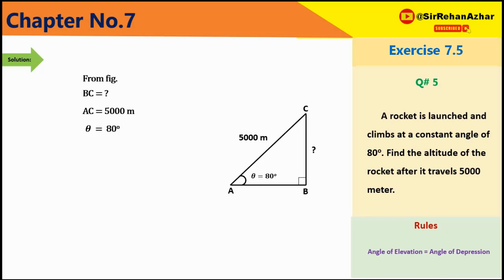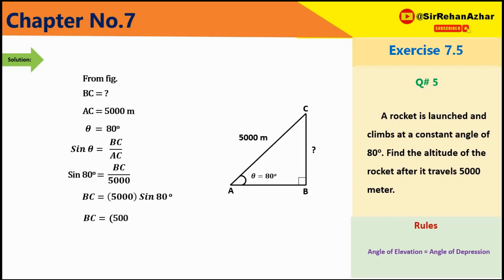Theta के respect BC है perpendicular और AC है hypotenuse। Perpendicular/hypotenuse = sin। Sin 80° = BC/5000۔ BC = 5000 × sin 80° = 5000 × 0.9848 = 4924.04 meter۔ Rocket की height 4924.04 meter है।